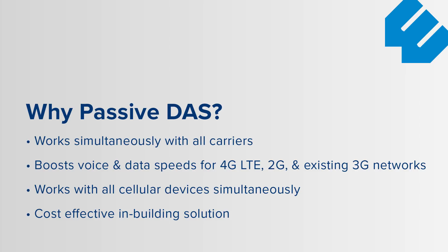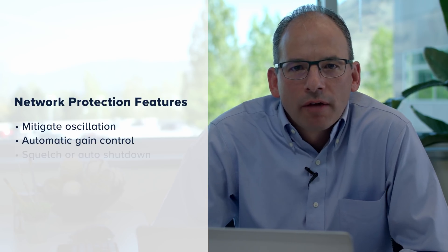So why passive DAS? Passive DAS works simultaneously with all carriers. It boosts voice and data speeds for 4G LTE, as well as 2G and existing 3G networks. It works with all cellular devices simultaneously, and is a cost-effective in-building solution. Wilson Electronics passive DAS solutions are FCC approved — certified under FCC Part 20, meaning they are pre-approved by carriers, starting back in March 2014. Key network protection features include oscillation detection and mitigation, automatic gain control that reduces amplification based on outside signal strength, and a squelch auto-shutdown feature that puts the amplifier into shutdown when no active user is detected.